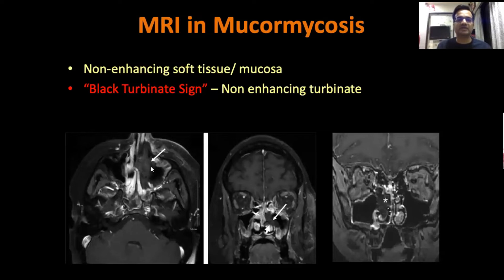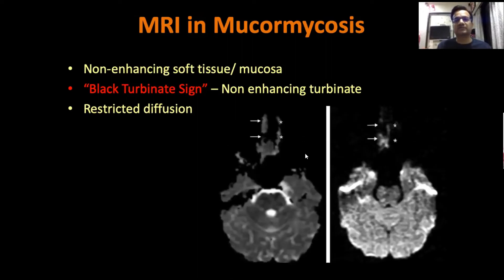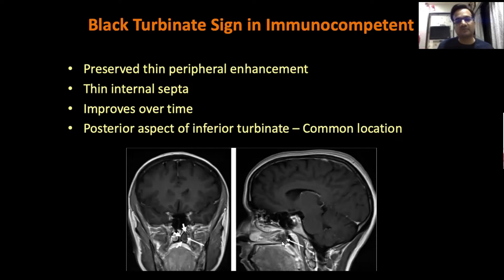This is another example where the turbinate is entirely necrotic and non-enhancing — that is the black turbinate sign. Remember, diffusion restriction can also help; always run the diffusion scan when doing MRI for this purpose, as diffusion restriction is also seen in mucormycosis cases. However, the black turbinate sign is not entirely specific to mucormycosis — it can be seen even in immunocompetent cases, but with a slight difference. In the earlier example, the entire turbinate appeared black and non-enhancing. In immunocompetent patients, typically only the posterior aspect is involved rather than the entire turbinate, and it may even be bilateral.